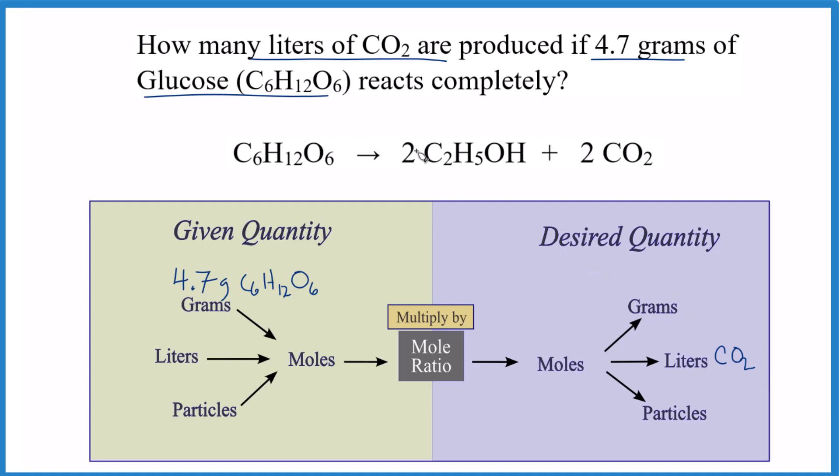First off, when you're given grams in a stoichiometry problem, you're going to convert it to moles. So we're looking for moles of glucose and we're going to convert that to moles of CO2. If we know the moles of CO2, then we can just get the liters. The way we're going to convert that is we're going to use a mole ratio. The mole ratio comes from the balanced equation. So we have 1 to 2 to 2. That's our mole ratio. So that's how we convert from moles of glucose to moles of CO2.